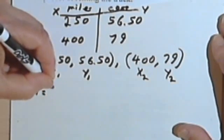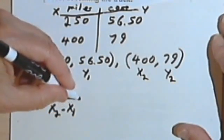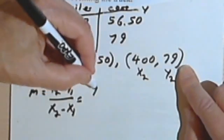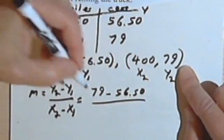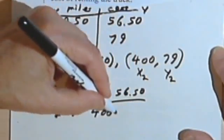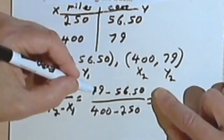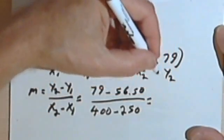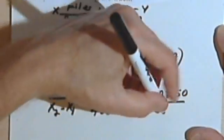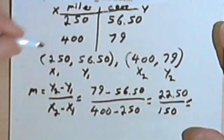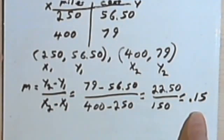So the slope is y sub 2 minus y sub 1 over x sub 2 minus x sub 1. So that's going to be 79 minus 56.50 and 400 minus 250. Let's see what that comes out to. 79 minus 56.50 is 22.50, and 400 minus 250 is 150. And I've worked this out earlier, so I know that comes to 0.15. So 0.15 is my slope.